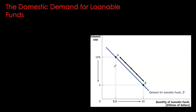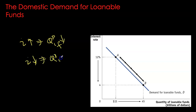The demand curve for loanable funds is therefore downward sloping. The higher the interest rate, the fewer projects are profitable at that rate — very few projects have a rate of return higher than or equal to 12%. Therefore, quantity demanded at point A is considerably lower than at point B, where the interest rate is much lower. At a lower interest rate, many more projects are profitable and quantity demanded increases. This gives us our downward sloping demand curve for loanable funds, holding everything else constant.